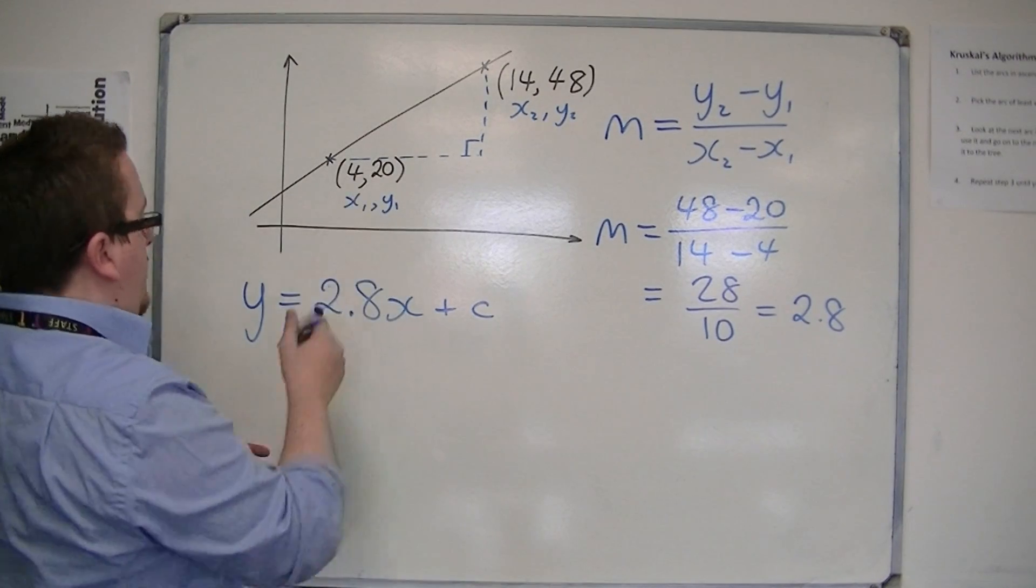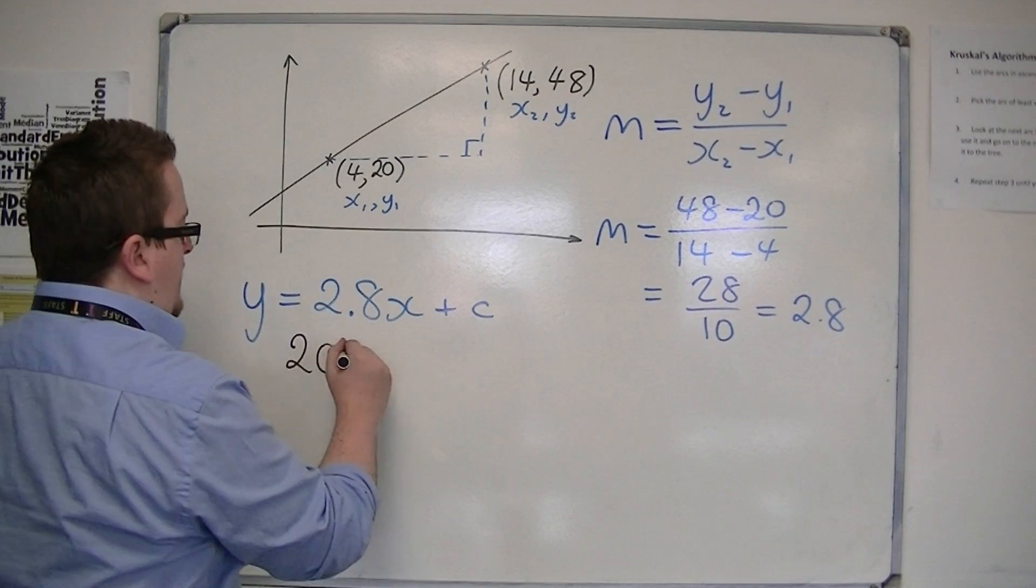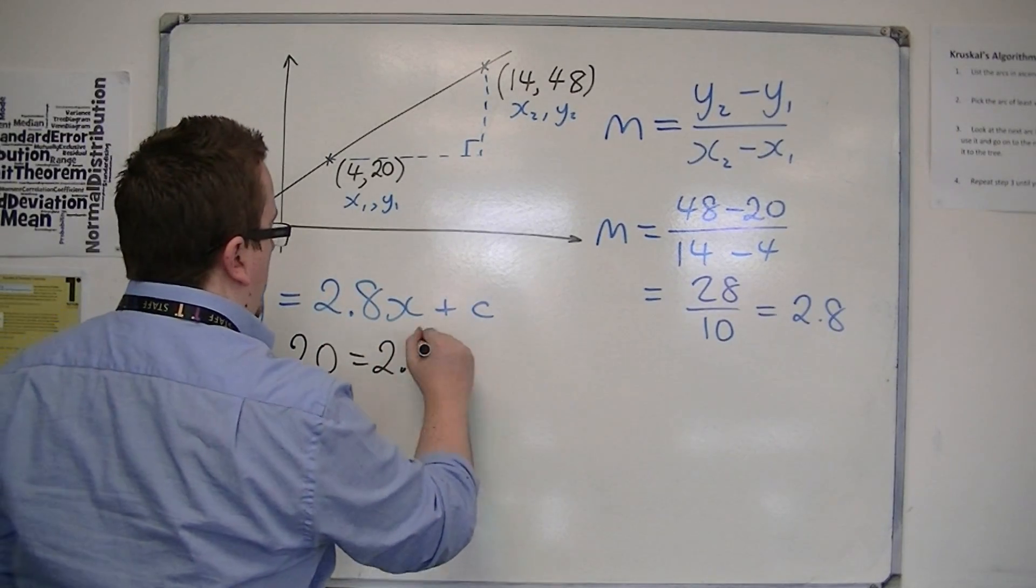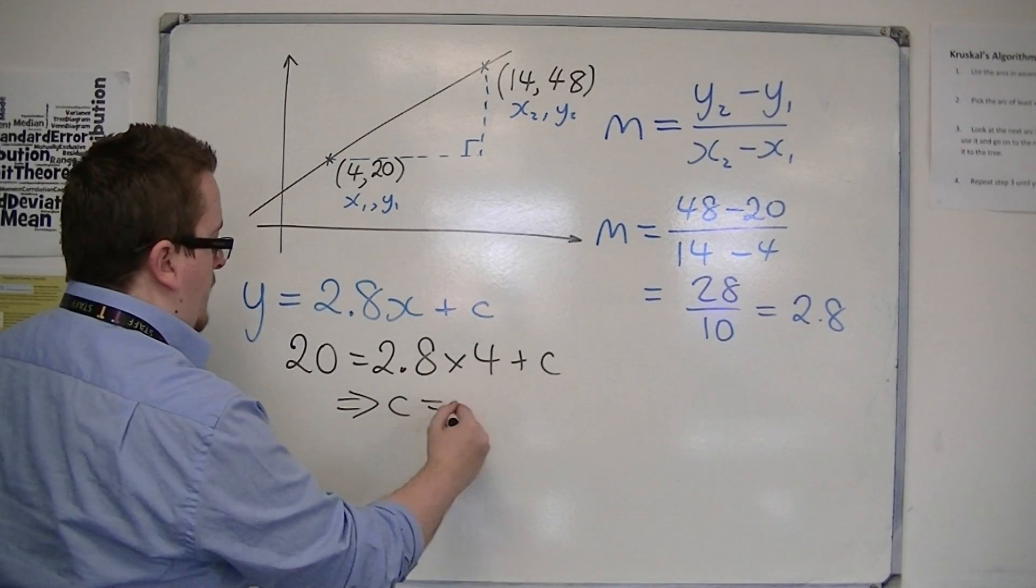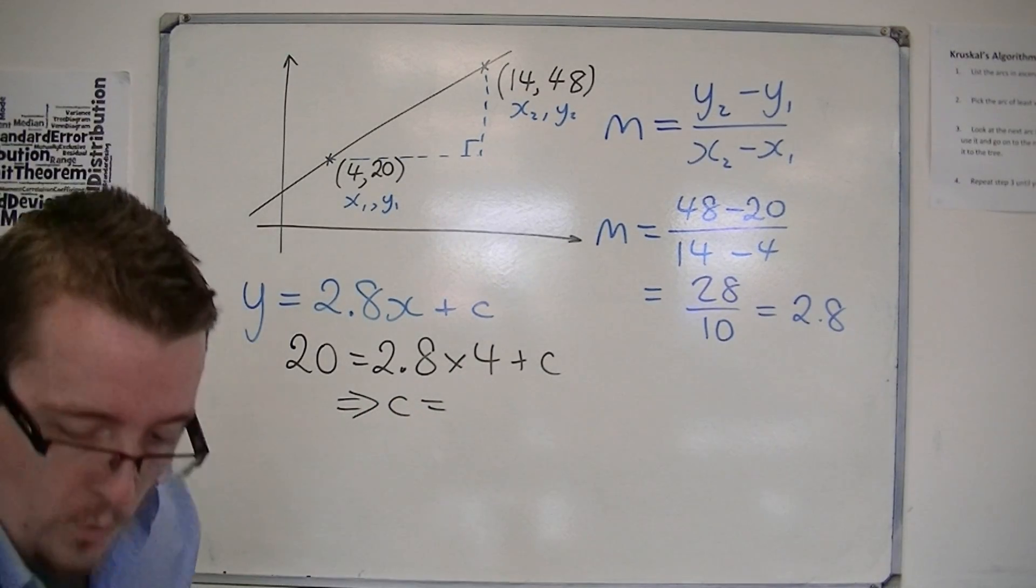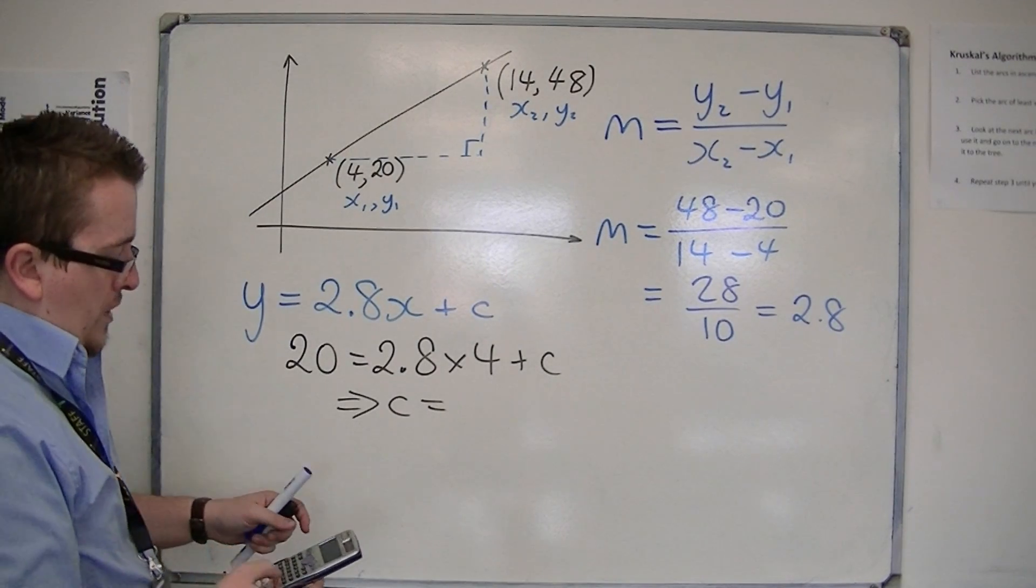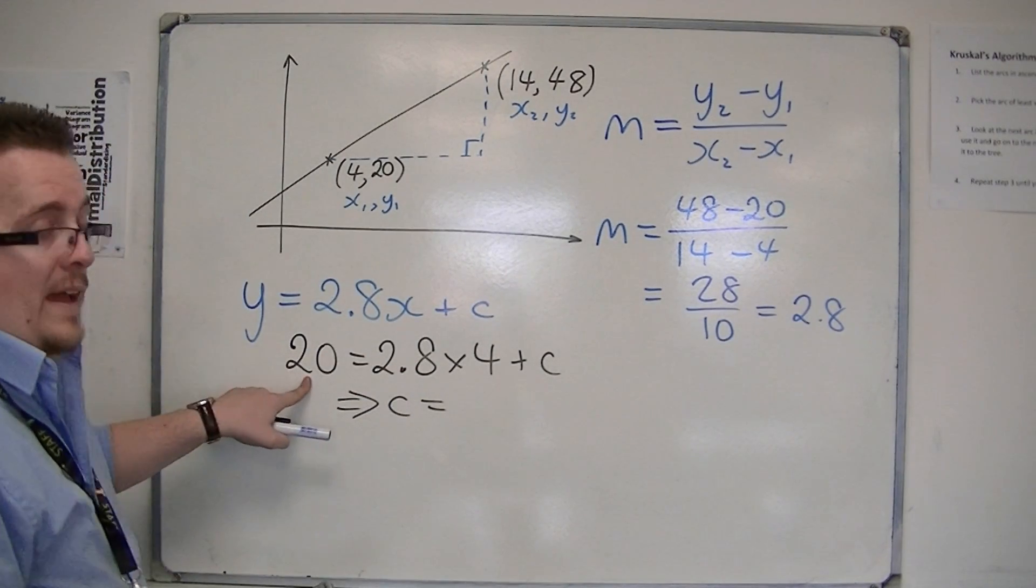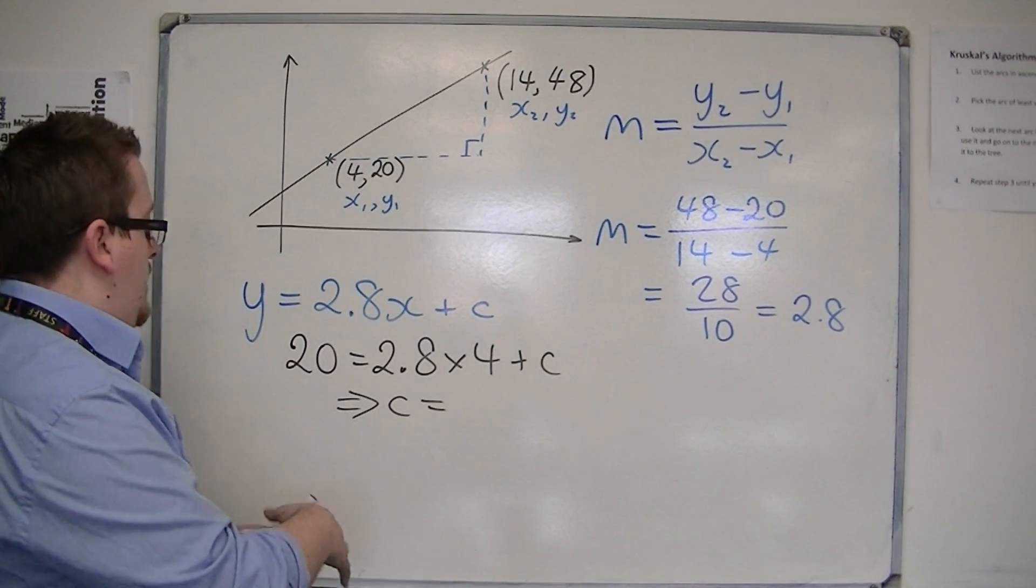I'm going to substitute in (4,20). So 20 is equal to 2.8 times 4 plus c. If you work out what 2.8 times 4 is, which is 11.2, and then subtract that from 20, you get 8.8.